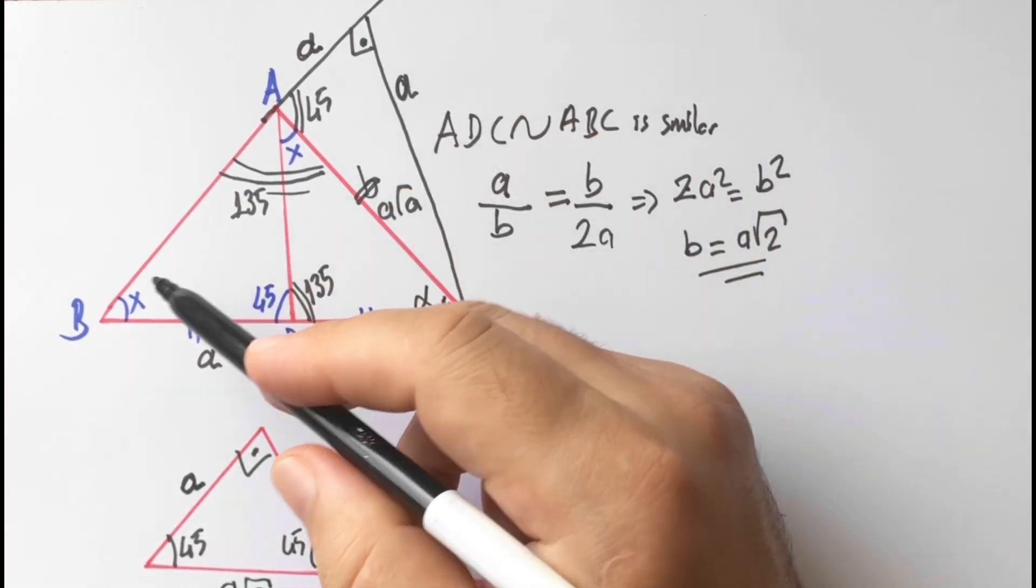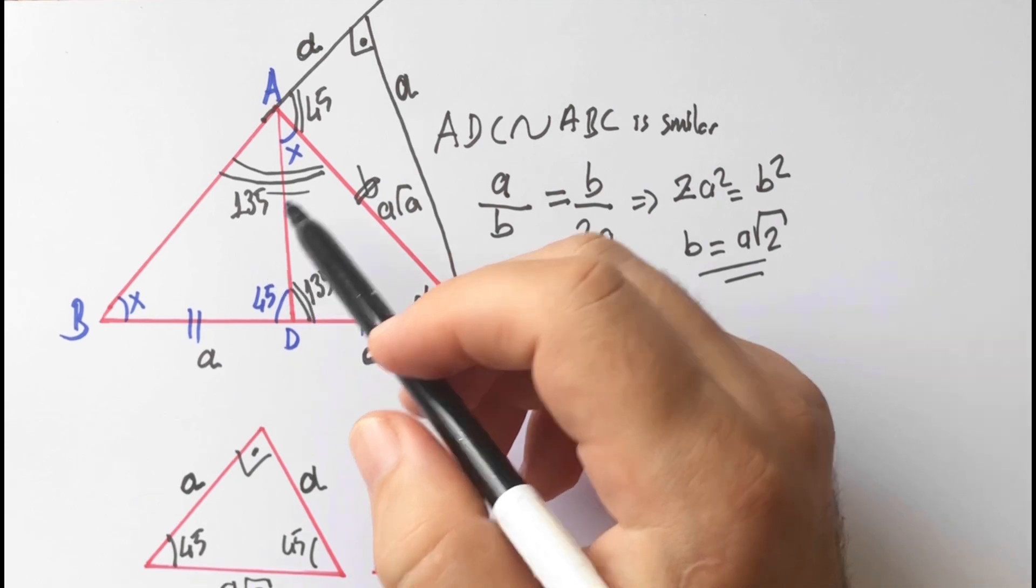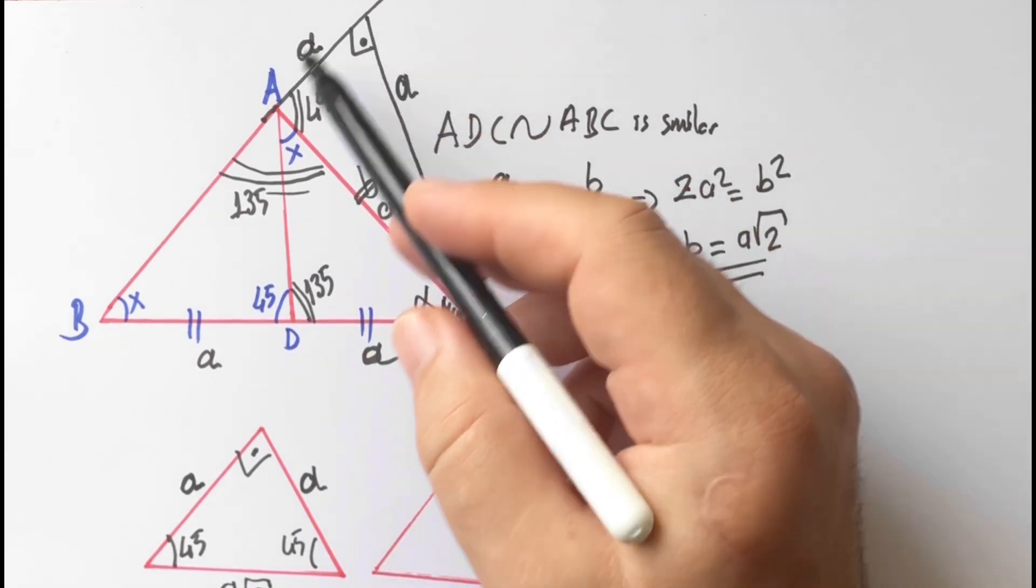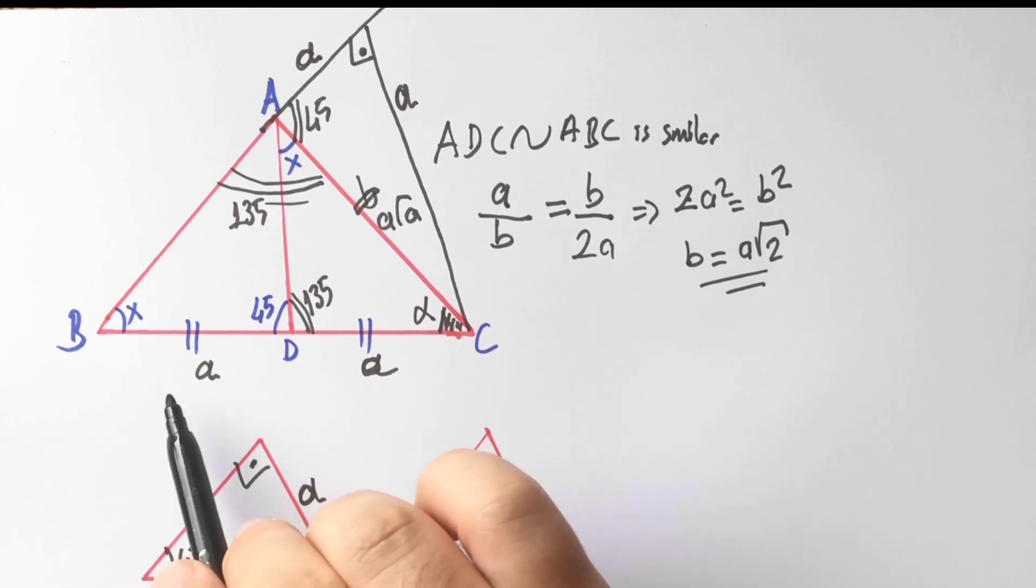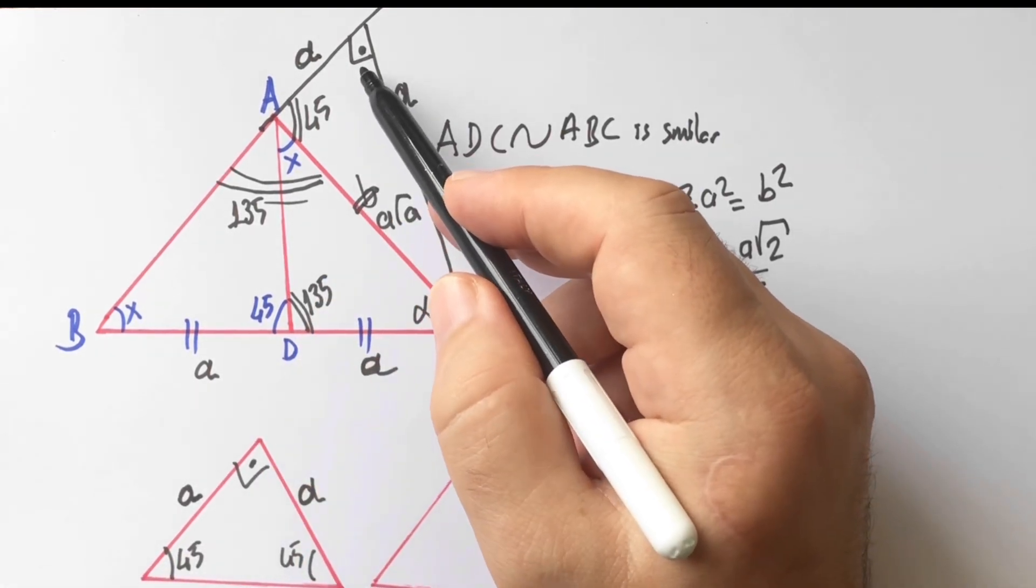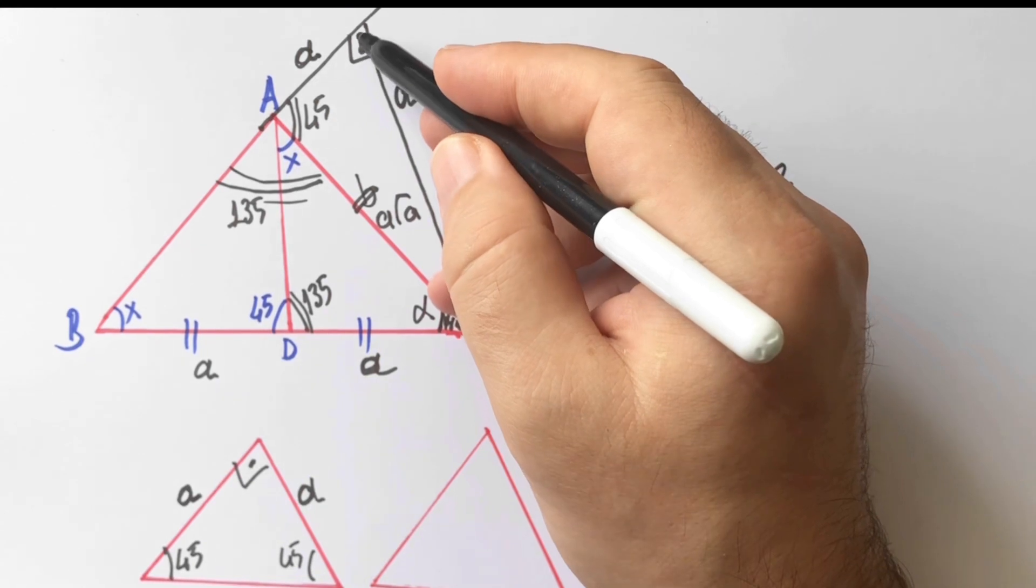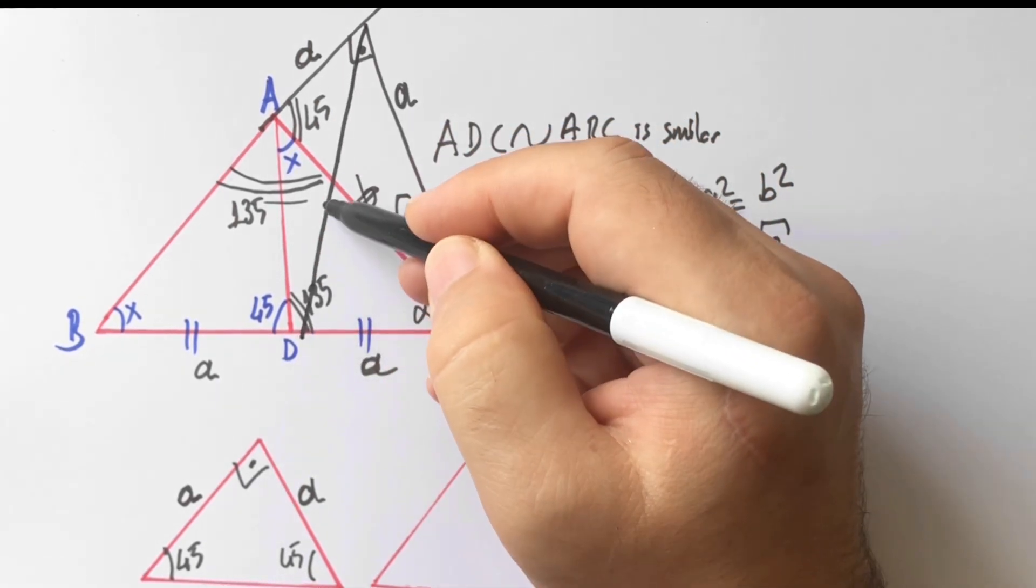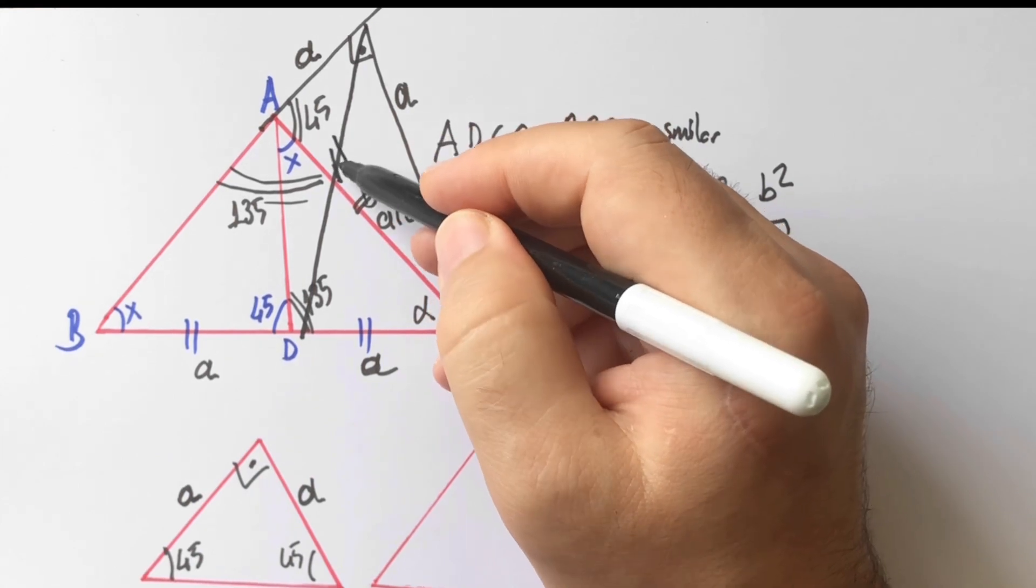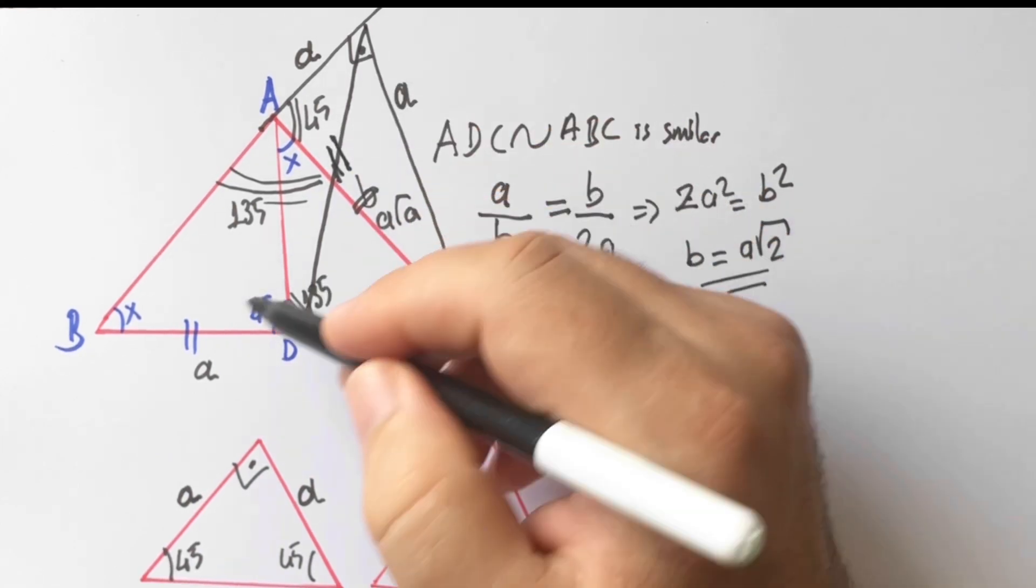So if you focus on the biggest triangle, you will notice that the base is divided into two equal parts and the top angle is 90 degrees. So I will connect here.